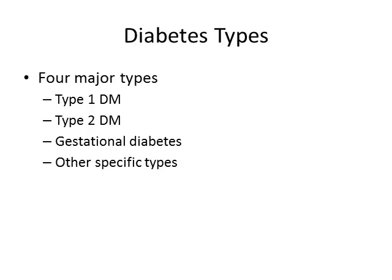Type 1 tends to occur in younger populations — children and adolescents — and these individuals actually stop producing insulin, becoming insulin dependent. Type 2 accounts for 90 to 95% of all diabetes. It used to be referred to as adult onset, but unfortunately we're starting to see more Type 2 in younger populations, related to lack of activity and obesity. Gestational diabetes develops during pregnancy and will be covered in maternity class. Other specific types are related to problems with the pancreas, beta cells, or different hormones.